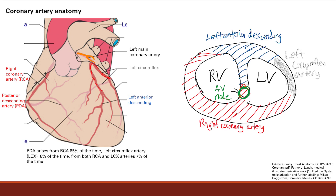Now if we look at the right side, we see the right coronary artery here — this is the main branch on the right side. That's going to split into the posterior descending artery. Now 85% of the time, the posterior descending artery does come from the right coronary artery, and in that case it is called a right dominant circulation.